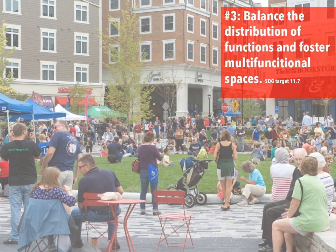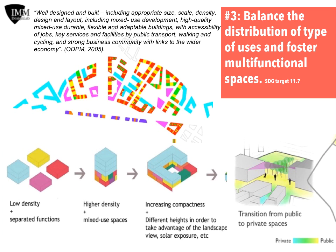DOP No. 3, Balance the Distribution of Functions and Foster Multifunctional Spaces, is correlated with the UN's SDG target 11.7. This issue is based on the notion that balancing the distribution of type of uses is more than mixing them. A proper distribution of uses deals simultaneously with the need of mixing them as a quantitative property and arranging them morphologically in a proper way, as a qualitative property.